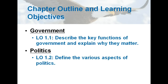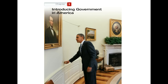This is the second of our textbook lectures. Our objective here is to describe the key functions of government and explain why they matter. The institutions that make authoritative decisions for any given society are collectively known as government. In our own national government, these institutions are the Congress, the president, the courts, and federal administrative agencies called the bureaucracy.